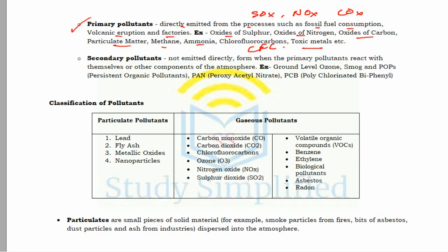Secondary pollutants are not emitted directly from sources; they result from reactions among primary pollutants. Examples include ground-level ozone, smog, POPs (persistent organic pollutants), PAN (peroxy acetyl nitrate), and PCBs (polychlorinated biphenyls).